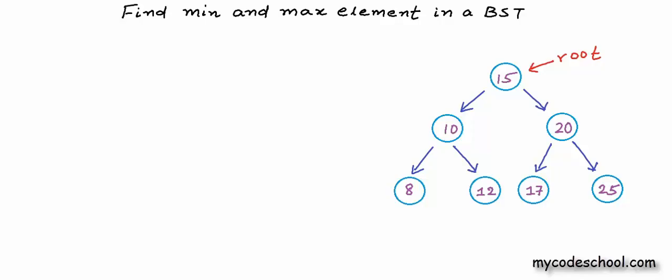I have drawn logical representation of a binary search tree of integers here. As we know in a binary search tree for all nodes, value of nodes in left subtree is lesser and value of nodes in right subtree is greater. This is how we can define node for a binary search tree in C, C++. We can have a structure with three fields: one to store data, another to store address of left child, and another to store address of right child.